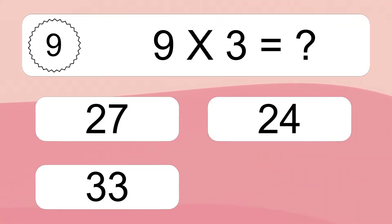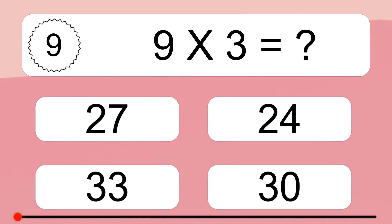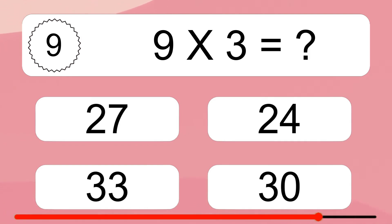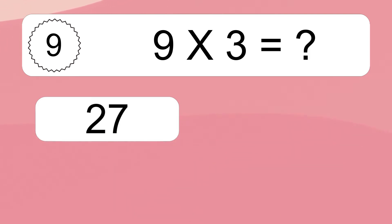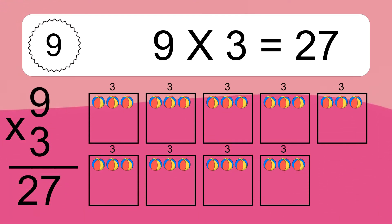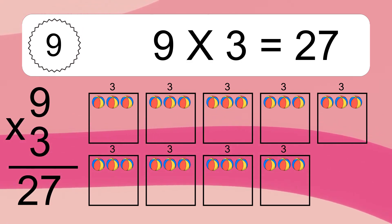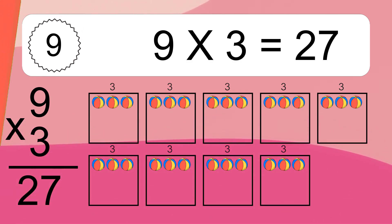Nine times three equals what? Nine times three equals 27. We have nine boxes, and each box has three colorful balls inside. If you count all the balls in all the boxes together, you will have nine times three balls. This equals 27 balls.